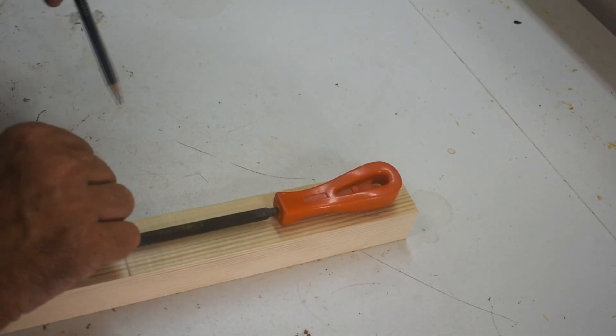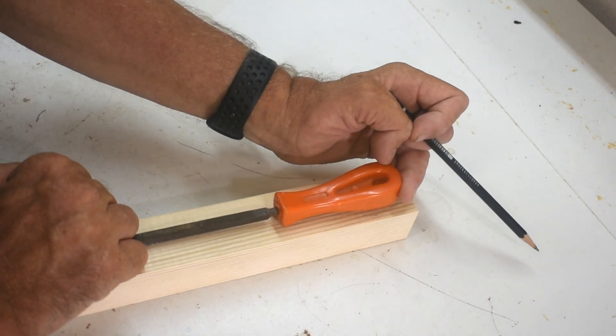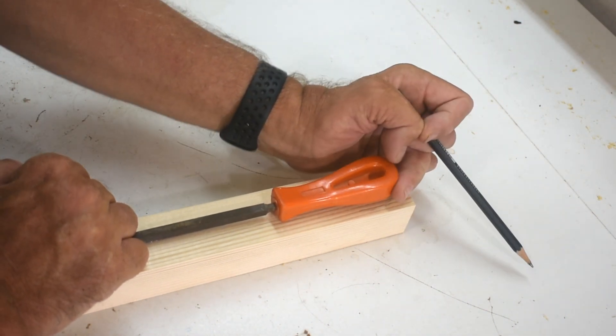Now it's time to make the handle. What I'm going to do is take a file handle and trace it onto the wood and then cut it out.